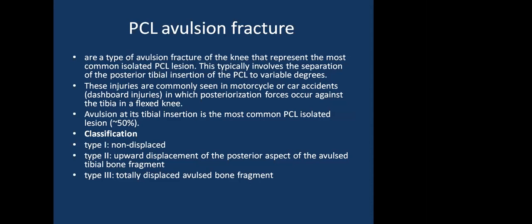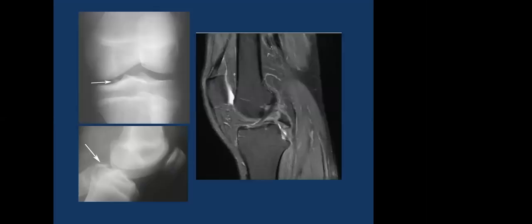PCL avulsion fractures represent the most common isolated PCL lesion, typically involving separation of the posterior tibial insertion of the PCL. These injuries are commonly seen in motorcycle or car accidents — dashboard injuries — in which posteriorly-directed forces occur against the tibia in a flexed knee. Avulsion at the tibial insertion is most common, occurring in about 50% of cases. Type 1 is a non-displaced fracture, Type 2 involves upward displacement of the posterior aspect of the avulsed tibial fragment, and Type 3 is a totally displaced bone fragment.